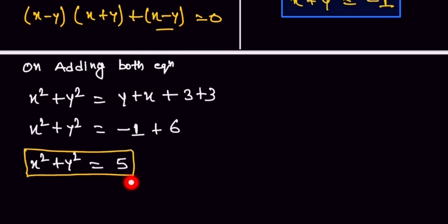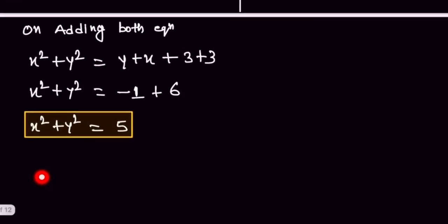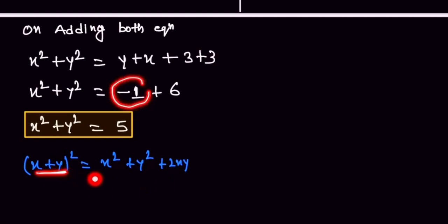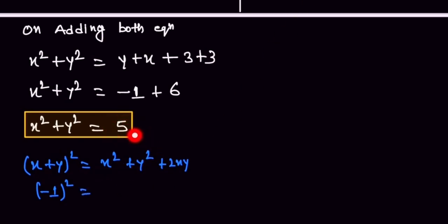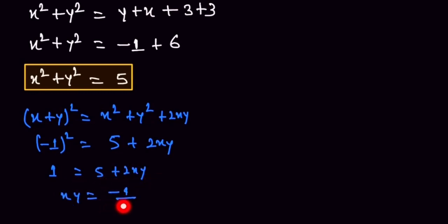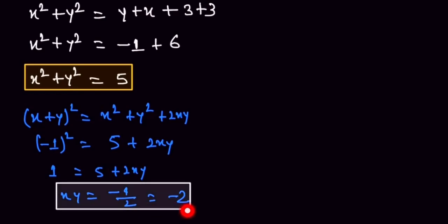Now we use the identity: (x+y)² equals x² plus y² plus 2xy. The value of x plus y is minus 1, so (−1)² equals 5 plus 2xy. That gives 1 equals 5 plus 2xy, so 2xy equals minus 4, and xy equals minus 2. We have found another value.